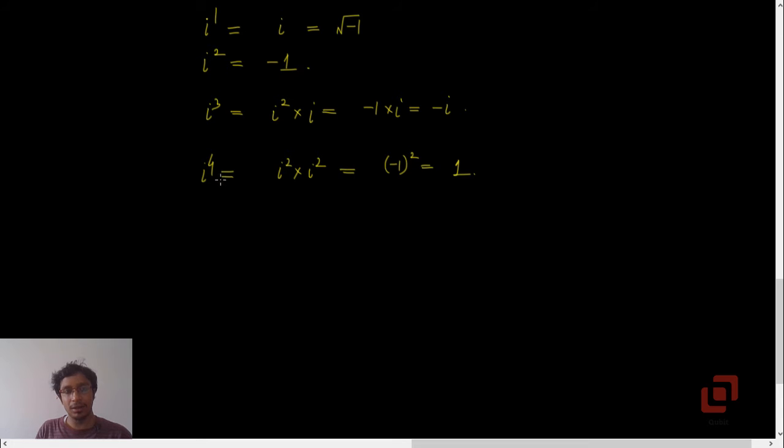And all the other powers of i, all the other natural powers of i will follow the sequence. So i raise to 4n will always be 1, where n is any natural number. i raise to 4n plus 1 will always be equal to i. i raise to 4n plus 2 will always be minus 1, and i raise to 4n plus 3 will always be minus i, because i raise to 4 is always equal to 1.